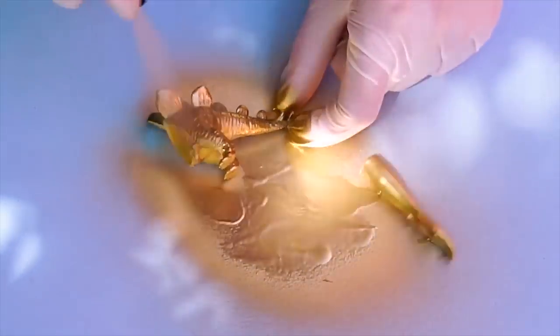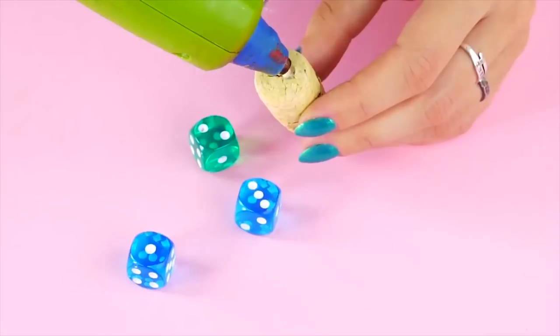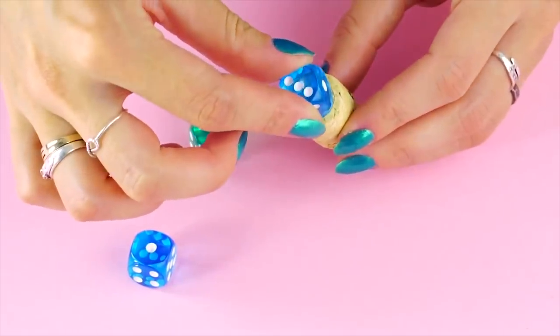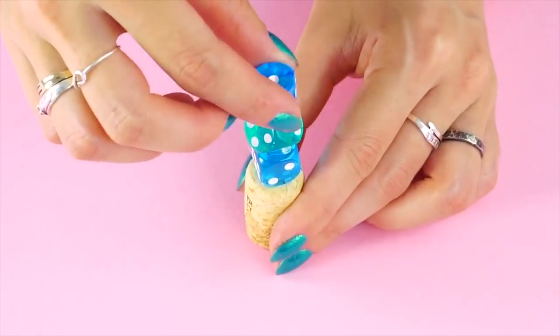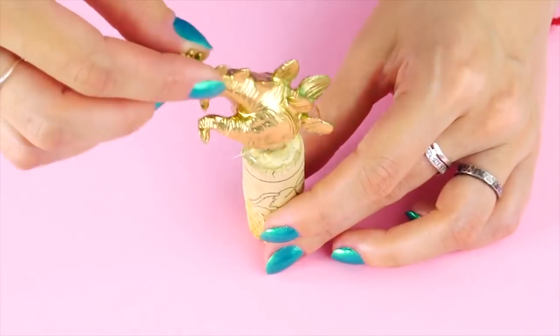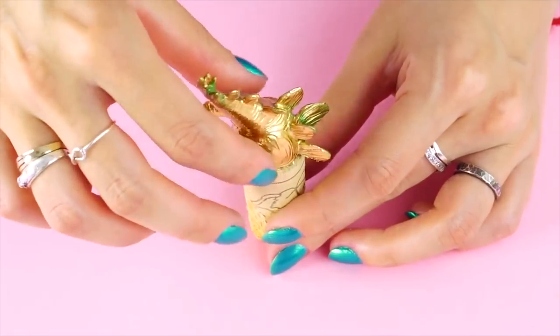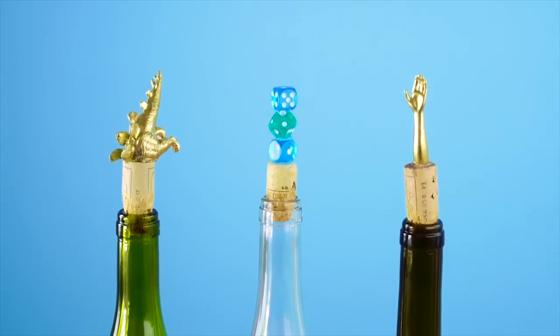Now spray paint your toy parts. Use latex gloves to keep the paint from staining your fingers. Use a hot glue gun to glue the objects on top of the cork. Now those are some fancy bottle stoppers.